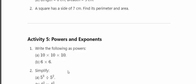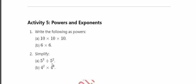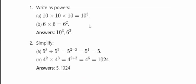Then, 5 cubed divided by 5 squared: we subtract the powers, so 5 to the power 1. Also, 4 squared multiplied by 4 cubed equals 4 to the power 5, which is 1024.